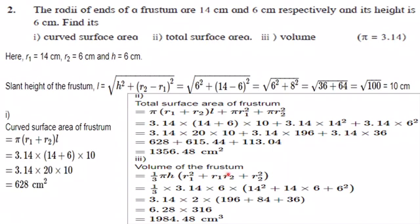Volume of frustum, this is your third sub question. It is one-third pi H into R1 square plus R1 into R2 plus R2 square. Substitute all the values and then find out volume. 1984.48 cm cube is the volume of frustum.